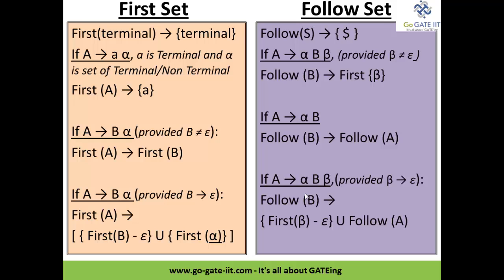There are certain rules associated with first set and follow set. We will go with first set first. The first rule says that the first of any terminal — terminals are generally described in the form of small letters — the first of any terminal always gives that terminal itself. This is the basic rule. Then, where A gives A-alpha, where A is any terminal and alpha can be a set of any terminal or non-terminal, the first of A equals the very first non-terminal.